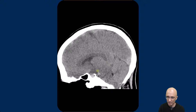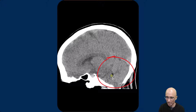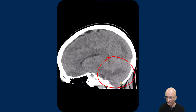On the sagittal images, you can see the pituitary gland appears prominent. There appears to be sagging of the entire posterior cranial fossa. There is mild tonsillar ectopia into the foramen magnum.